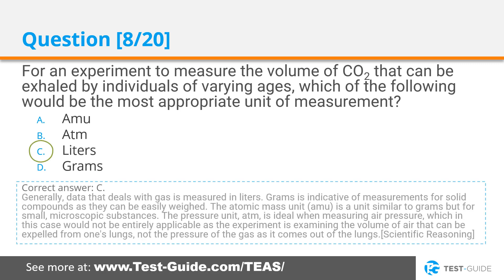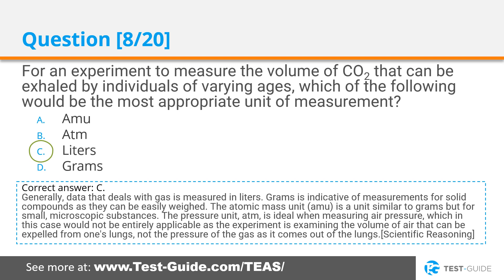Correct answer C. Generally, data that deals with gas is measured in liters. Grams is indicative of measurements for solid compounds as they can be easily weighed. The atomic mass unit, AMU, is a unit similar to grams but for small microscopic substances. The pressure unit, ATM, is ideal when measuring air pressure, which would not be entirely applicable here as the experiment is examining the volume of air that can be expelled from one's lungs, not the pressure of the gas as it comes out.